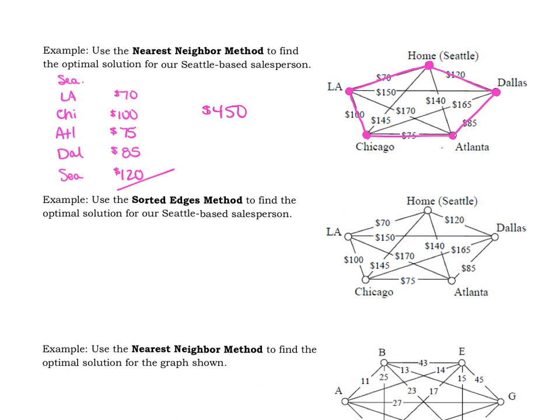Some people refer to it as the cheapest link. So again, reading you the instructions that are there, it says, number one, select the edge with the cheapest unused edge in the graph. In other words, anything that you haven't used yet, pick the least expensive. It does not matter whether we're starting in Seattle or not. You just look at that and you say, this one is the least expensive. So for us, the least expensive happens to be from Seattle to LA. And so that's the first edge that we add is Seattle to LA for $70.